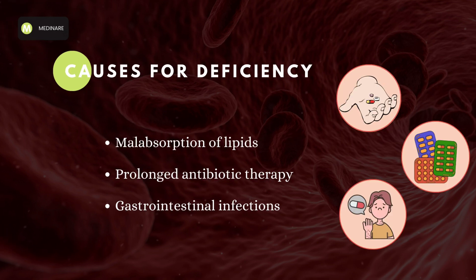Now let's look at the causes for deficiency of Vitamin K. Absorption of Vitamin K from the intestine serves as the major source of the vitamin. Malabsorption of lipids, prolonged antibiotic therapy which destroys all the intestinal flora, and gastrointestinal infections which also lead to destruction of the gastrointestinal flora are all causes for deficiency of Vitamin K.